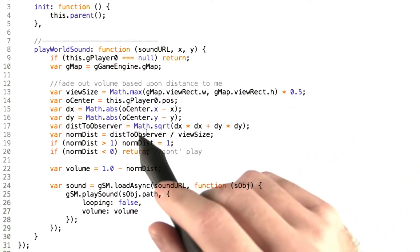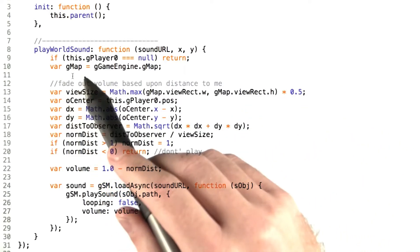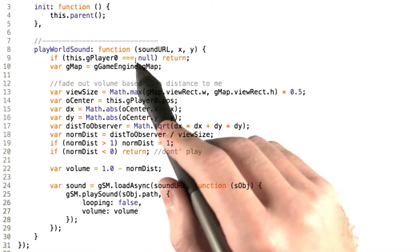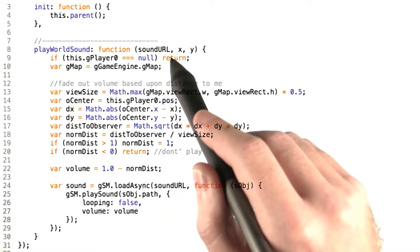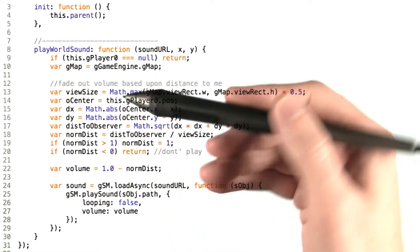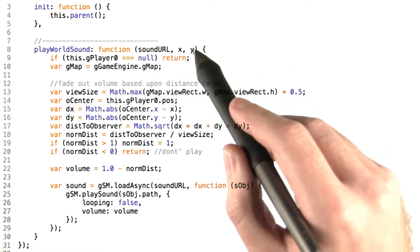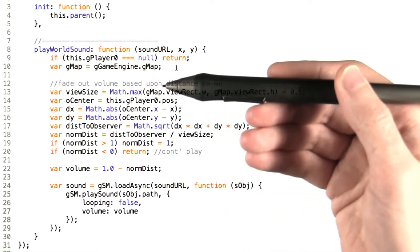Let's take a look at how we implemented the play world sound function. It takes as parameters first a sound URL representing the path to the sound that we want to play in the world, and then the x and y position that this sound should be played at.